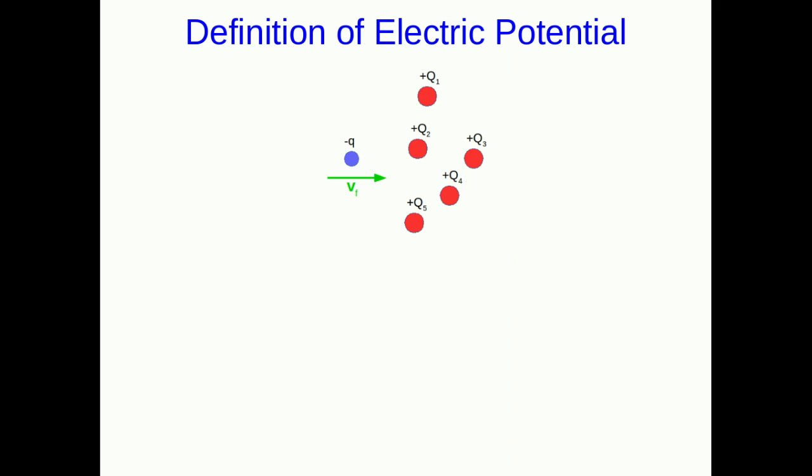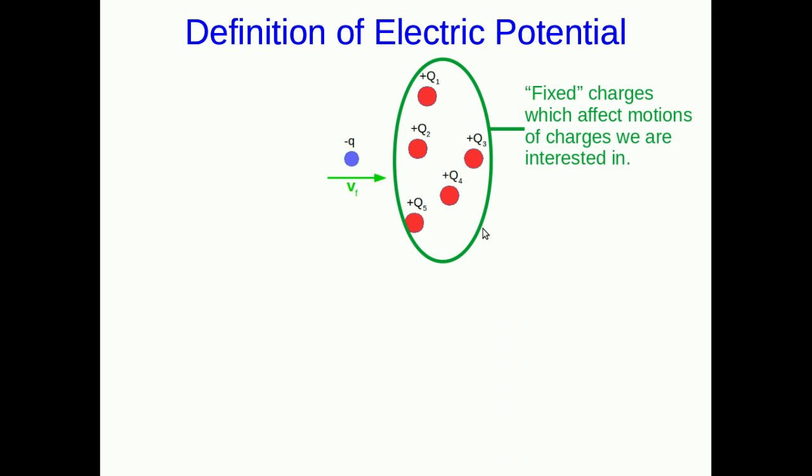Now we're ready to define the electric potential. Here is our situation with a moving charge and some other charges that influence it. And those other charges we are thinking of as fixed. They affect motions of charges we're interested in, but we don't really care about them. They are what you might call source charges.